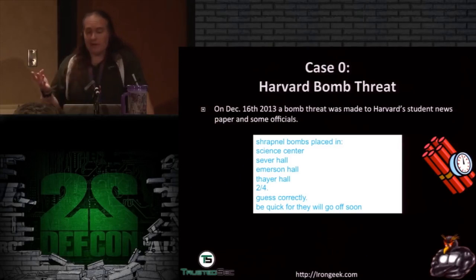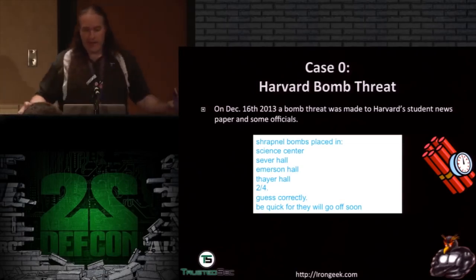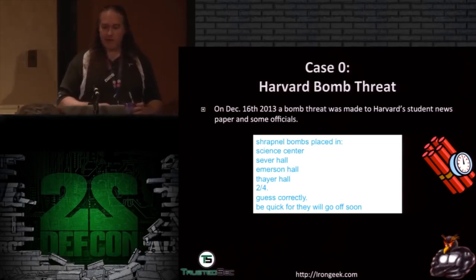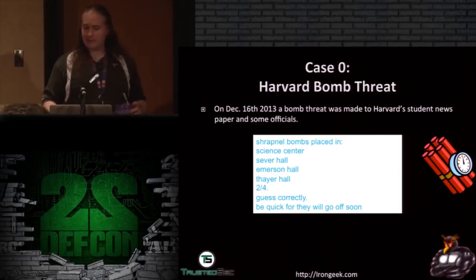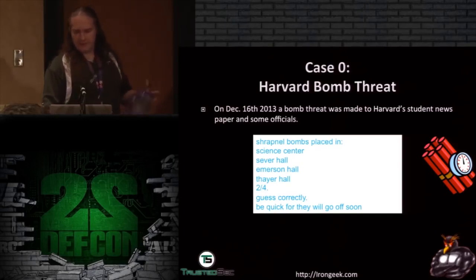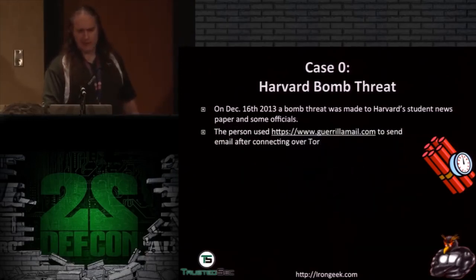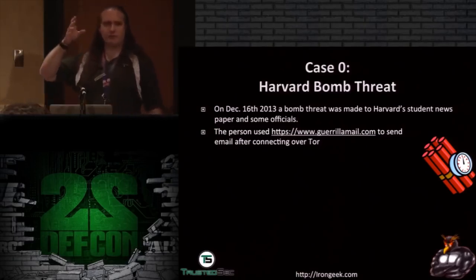The first case is the Harvard bomb threat. A guy at Harvard mailed a threat saying: 'Shrapnel bombs placed in Science Center, Silver Hall, Emerson Hall, Thayer Hall — two or four, guess correctly, be quick before they go off soon.' He sent this on December 16th. They had to figure out who this guy was. He used Guerrilla Mail, and Guerrilla Mail puts your originating IP address in the email headers — so if you did it from home, your real IP would be there.